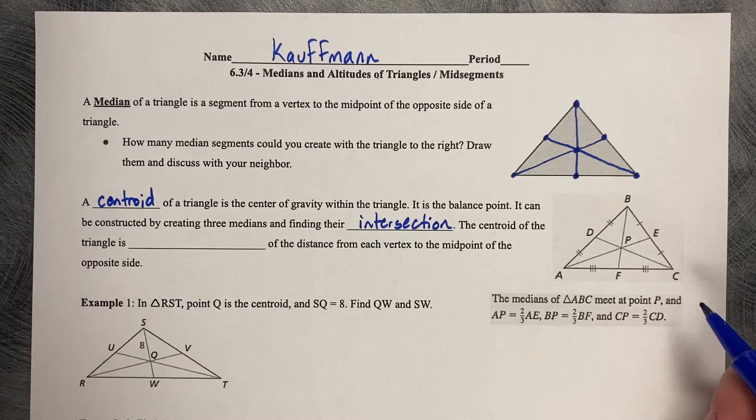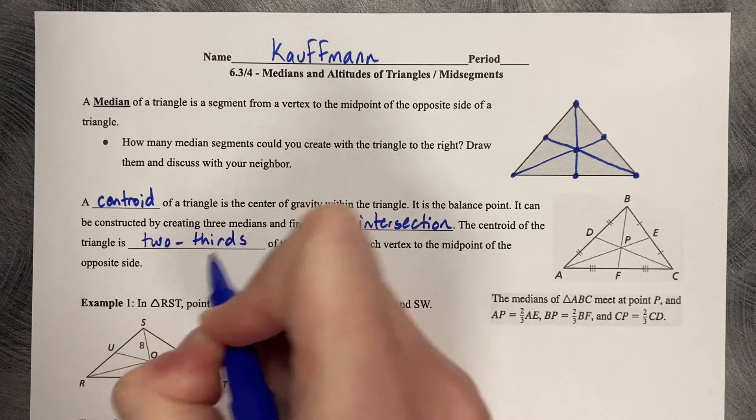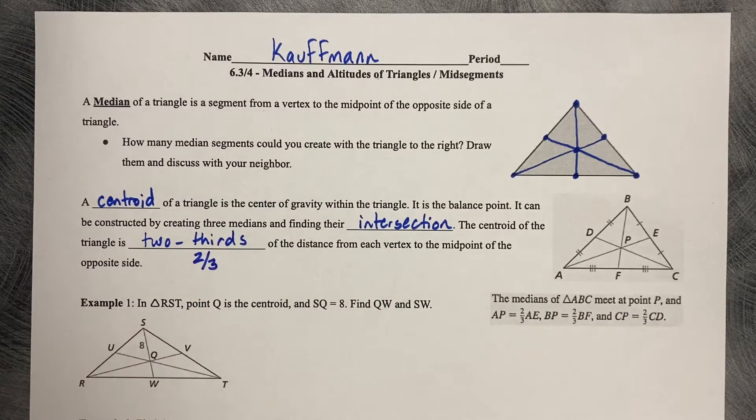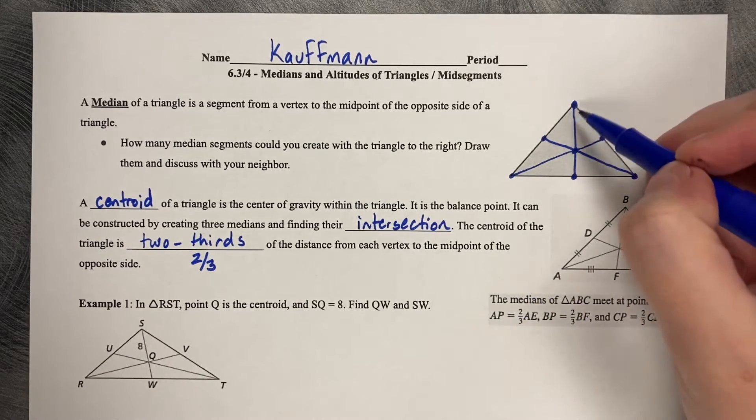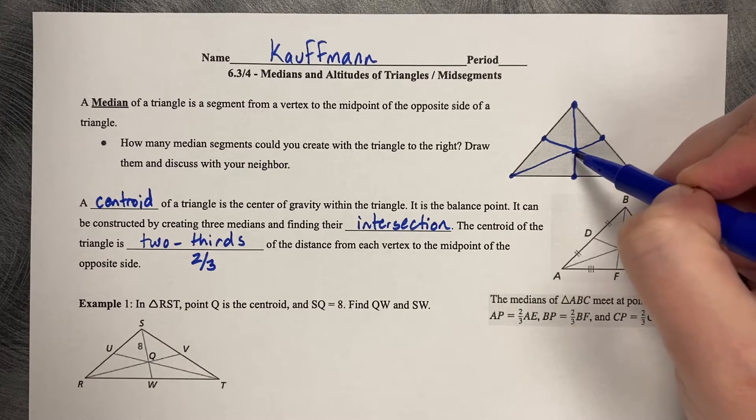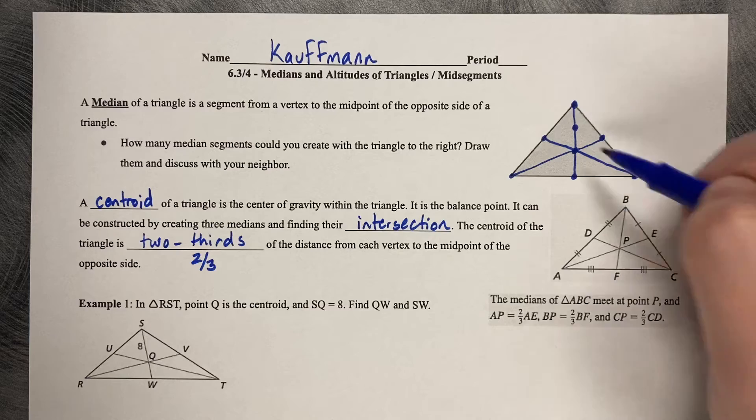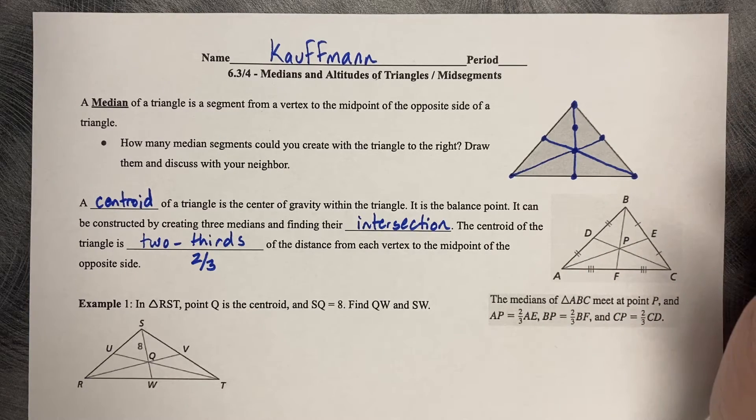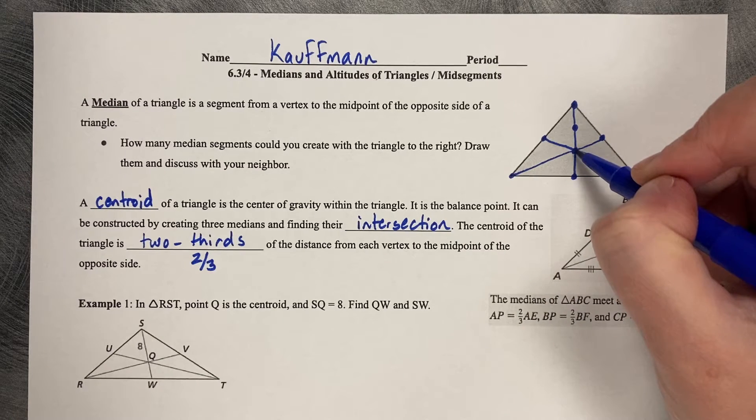The centroid of the triangle is two-thirds of the distance from each vertex to the midpoint of the opposite side. So if you can imagine, you're going to take each of these segments and cut it into three equal pieces. This is one-third, and then if I cut it again, two-thirds, three-thirds. And you can do that in each direction of each median. And it will create the centroid at the two-thirds mark. See how it's two-thirds down, one, two, and then the centroid.